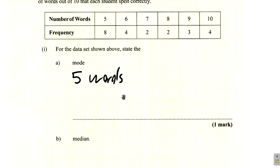The median is the category that occurs at the center of the distribution when the values are laid out in ascending or descending order. If you have an even number, you take the 2 in the middle and find their average. How many times were words spelled correctly? 8 and 4 is 12, plus 2 is 14, then 15, 16, 17, 18, 19, 19 plus 4 gives us 23.